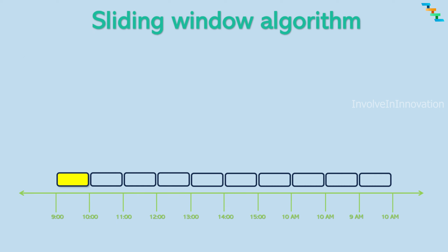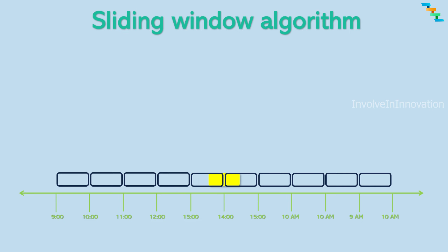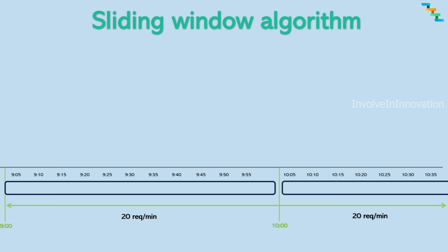Now we will see about the sliding window rate limiting algorithm. Sliding window rate limiting is a dynamic approach to control the rate at which clients can access an API. Unlike fixed rate limiting where the number of requests is constant for a specific time period, sliding window rate limiting tracks requests over a continuous window that moves forward in real time. This allows for more flexibility in handling bursty traffic patterns and provides a more accurate representation of current request rates.